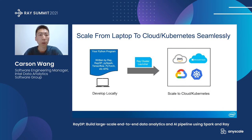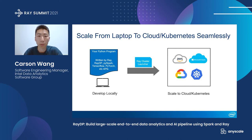It's also very easy to scale your Ray program from your laptop to cloud or Kubernetes. We usually start development on our local laptop with a small dataset, implementing our Python program using all available APIs like Ray, RayDP, PySpark, and deep learning framework APIs. Once it works well on our local laptop, we can use Ray cluster launcher to start a Ray cluster in the cloud or on Kubernetes. Ray supports autoscaling, so we can start with a small number of instances and scale out when the program requires more resources. If you are running Spark on Ray and want to scale to the cloud, you don't even need to set up a separate Spark cluster — just use the Ray cluster launcher.